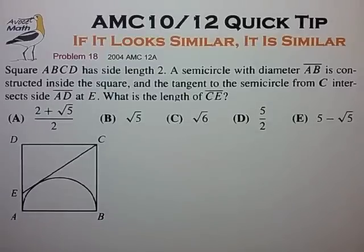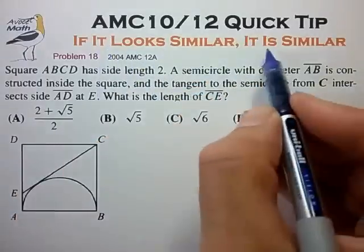In this video we'll look at similarity and a useful shortcut for analyzing similarity in AMC geometry problems. In geometry proofs we have various criteria for proving triangle similarity, but in AMC problems it's often helpful to use the heuristic shortcut that if it looks similar, it is similar.